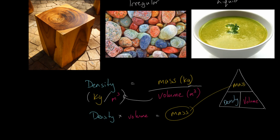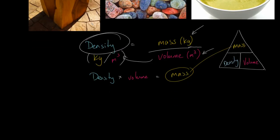This required practical is really all about the method, because for each of your three objects — the block, the irregular object, and the liquid — you need to find a mass and a volume so you can divide mass by volume. Let's start with the easiest one: if you have a wooden block and want to work out its density, you need your volume and your mass.